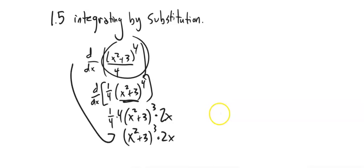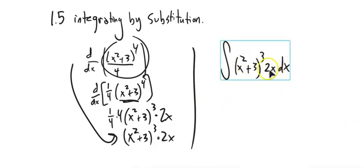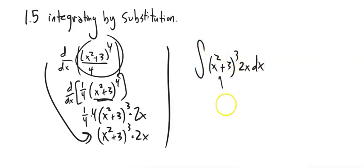So notice I started with 1/4(x² + 3)⁴, took the derivative, and got (x² + 3)³ · 2x. Now I'm going to think about going the other way — I want to take the integral of (x² + 3)³ times 2x dx. I want to illustrate this technique called substitution. In this technique, you notice there's a function inside another function — x² + 3 is inside the cubing — so we say, let u equal x² + 3.